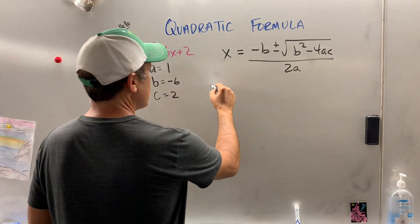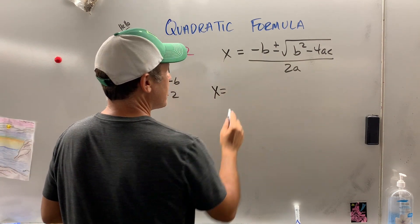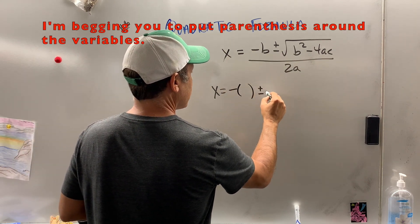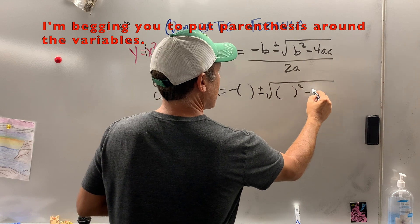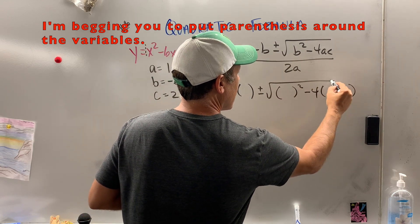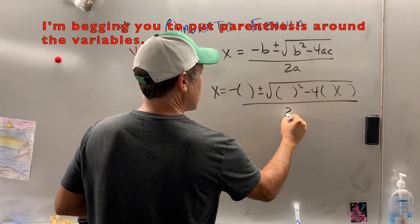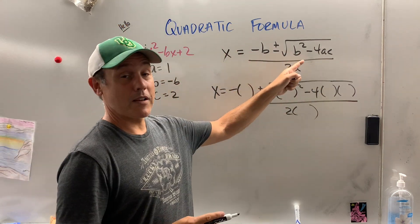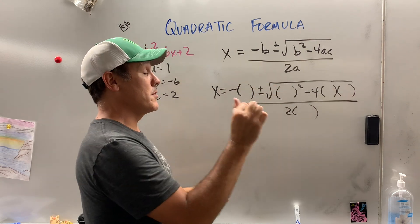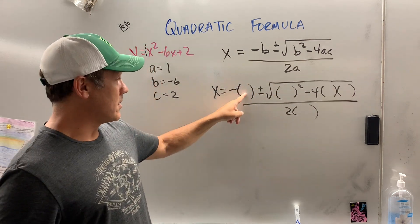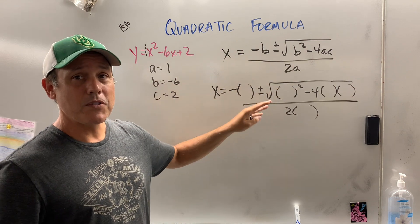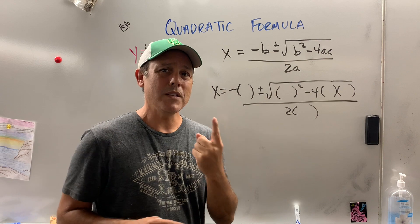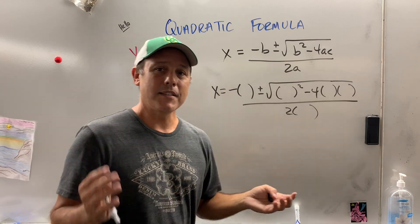This is where I see kids get into a lot of problems. Watch what I'm doing. All I'm doing right now is putting parentheses around the variables. I could have written the quadratic formula down again, put parentheses around the variable, and then started erasing. But do you see what I've done? If you don't use parentheses, you're going to pay a price. You're going to miss a sign, and if you miss one little sign anywhere along the way, it's game over.